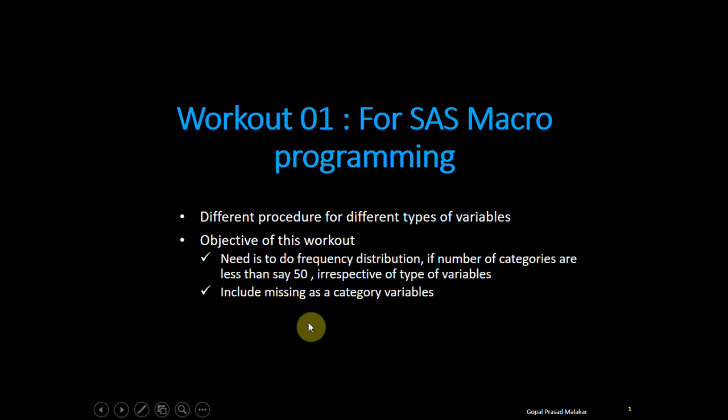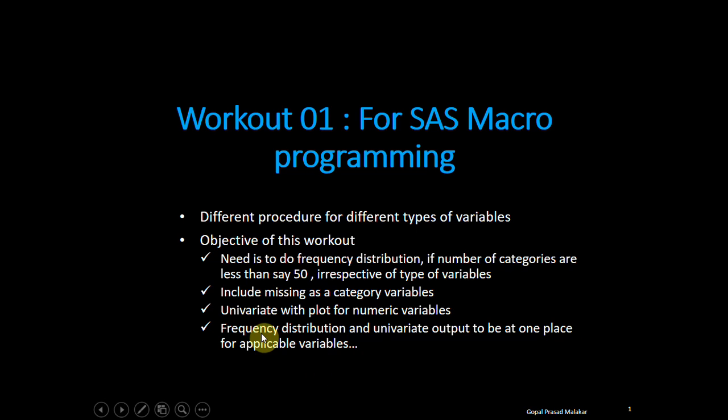Secondly, you have to include missing as a category variable. You have to run univariate with plot for all numeric variables. What you need to understand is that just for this portion, you don't need a macro. You could have used just proc univariate and underscore numeric underscore. But here the task is that you have to put frequency distribution and univariate output side by side, so for one variable you need to run univariate and frequency distribution almost together so that their output is at one place. That's why you can't achieve that just by underscore numeric underscore.